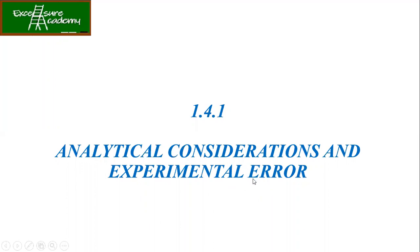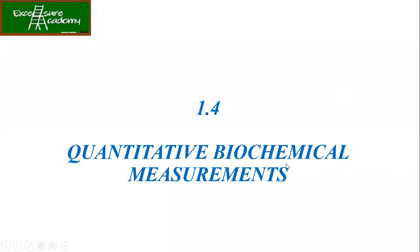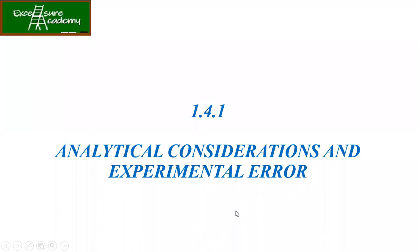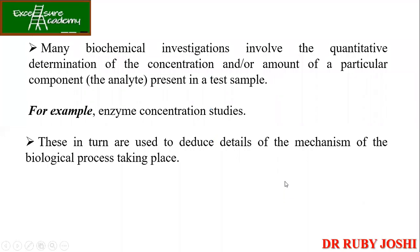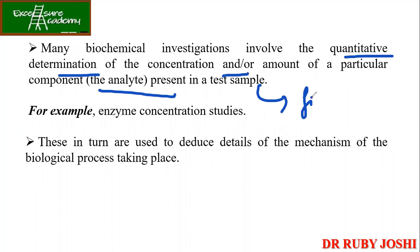In this topic on quantitative biochemical measurements, we are going to discuss errors, analytical concentrations, and experimental error. Many biochemical investigations involve the quantitative determination of the concentration or amount of a particular component present in a test sample — for example, enzyme concentrations — which are then used to deduce details of the mechanism of the biological process taking place.